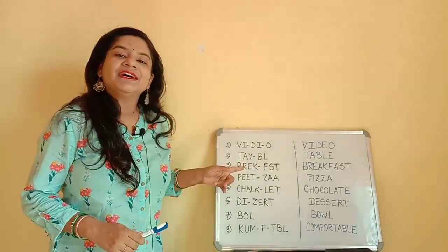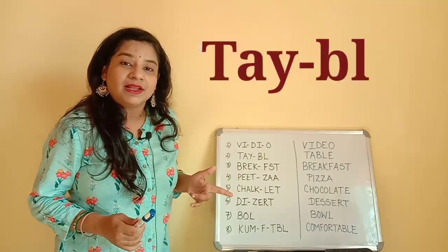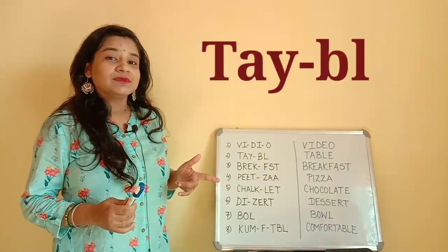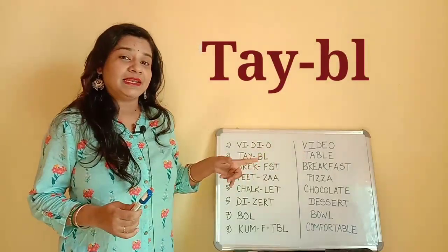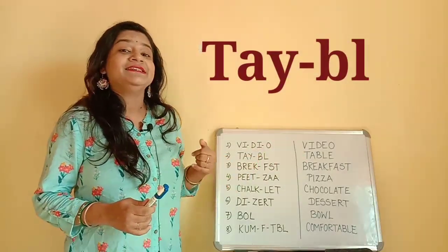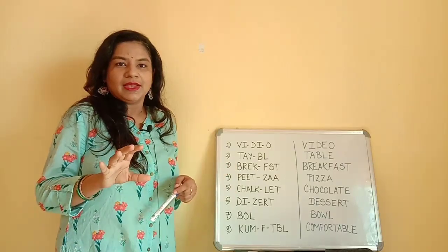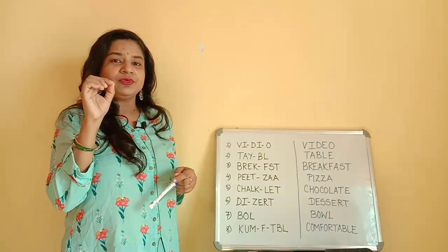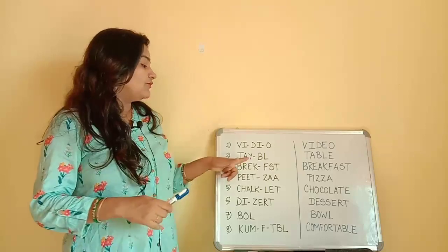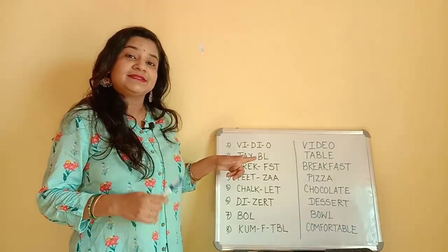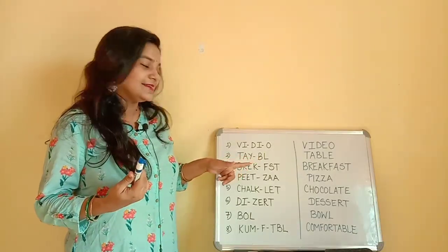The second word is 'table'. How do you pronounce T-A-B-L-E? It is not 'table' — you have to have the sound of Y in it. It is called 'table'.